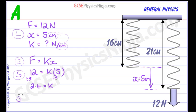And so finally we can state the answer with the correct unit. Our spring constant k is 2.4. And check the units up here. Newtons per cm.